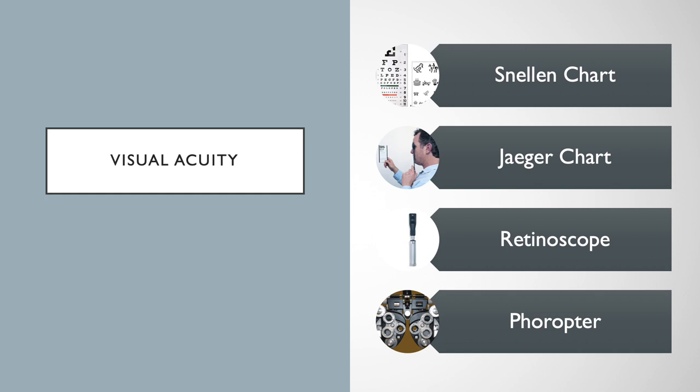The Snellen chart is one of the most common and convenient tools used to test for distance visual acuity, while the Jaeger chart can be used for near vision. With retinoscopy, we can objectively measure refractive error by observing light reflexes and using a plus or minus lens to neutralize a patient's refractive error. Lastly, a phoropter can also be used to assess refractive error, but it relies on subjective responses from the patient.